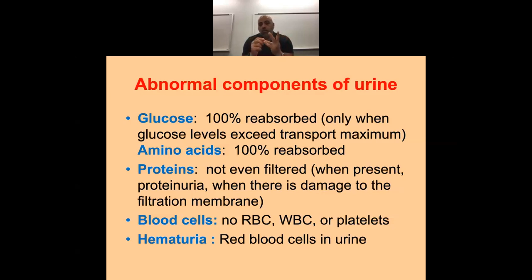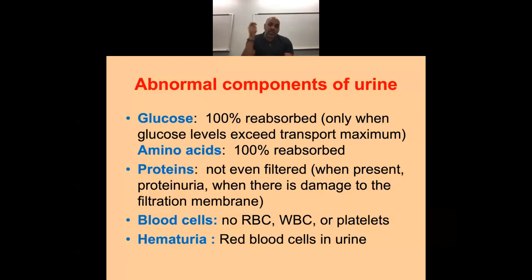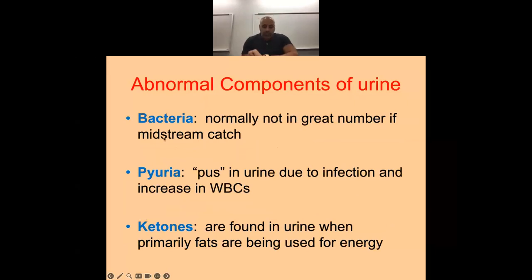Abnormal components of urine: we should never see glucose unless the patient is diabetic. Amino acids we shouldn't see unless on a keto diet. Never any protein whatsoever. No blood cells whatsoever unless they have a UTI. Hematuria is blood in the urine — gross hematuria is when the patient sees it; microscopic is detected on a dipstick. These can be identifiers for stones, infections, or cancer. We should always identify why because it is abnormal.